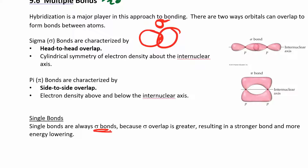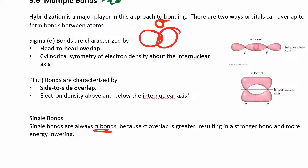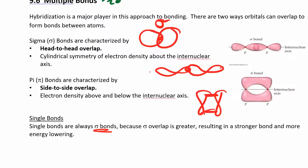Another type of sigma bond arises when two p orbitals overlap head-to-head. Remember, p orbitals exist on three different axes. If two p orbitals overlap head-to-head, that's a sigma overlap. P orbitals can also overlap side-to-side — that side-to-side overlap is a pi bond. So we have two types of sigma bonds: s-s overlap and p-p head-to-head overlap.